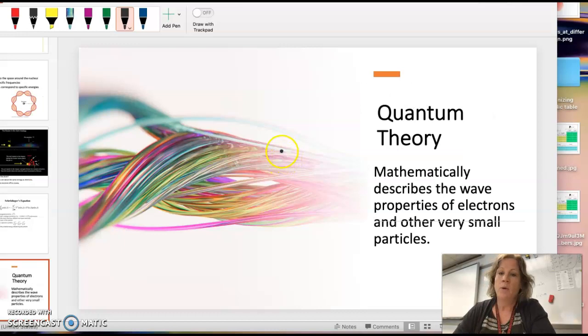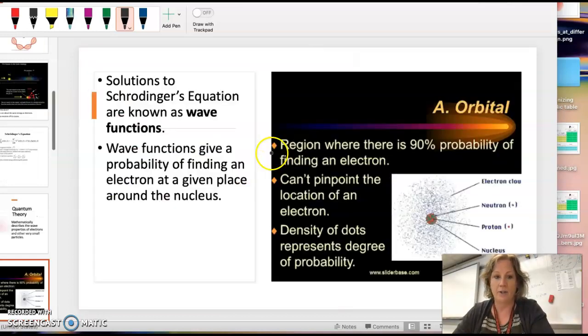Quantum theory uses the math to describe the wave properties of the electrons and other really small objects. We're going to focus on electrons. The solutions to Schrödinger's equation are known as wave functions. And the wave function gives the probability of finding an electron at a given place around the nucleus.